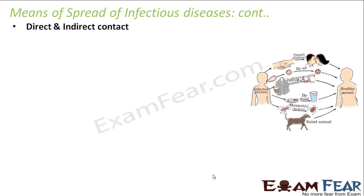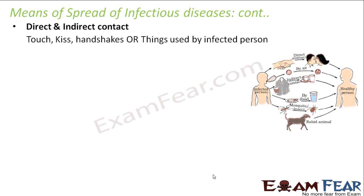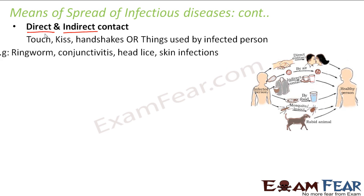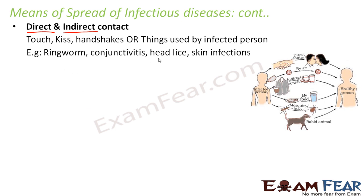The next means of spread is direct and indirect contact. If a healthy person stays in contact with an infected person — by handshakes, touching, or kissing — the microbes can get transferred from the infected person to the healthy person. Indirect contact means you are not touching that person directly, but you are touching things used by the infected person, such as wearing the same shirt or drinking from the same glass. Diseases that spread by this means include ringworm, conjunctivitis, head lice, and skin infections.